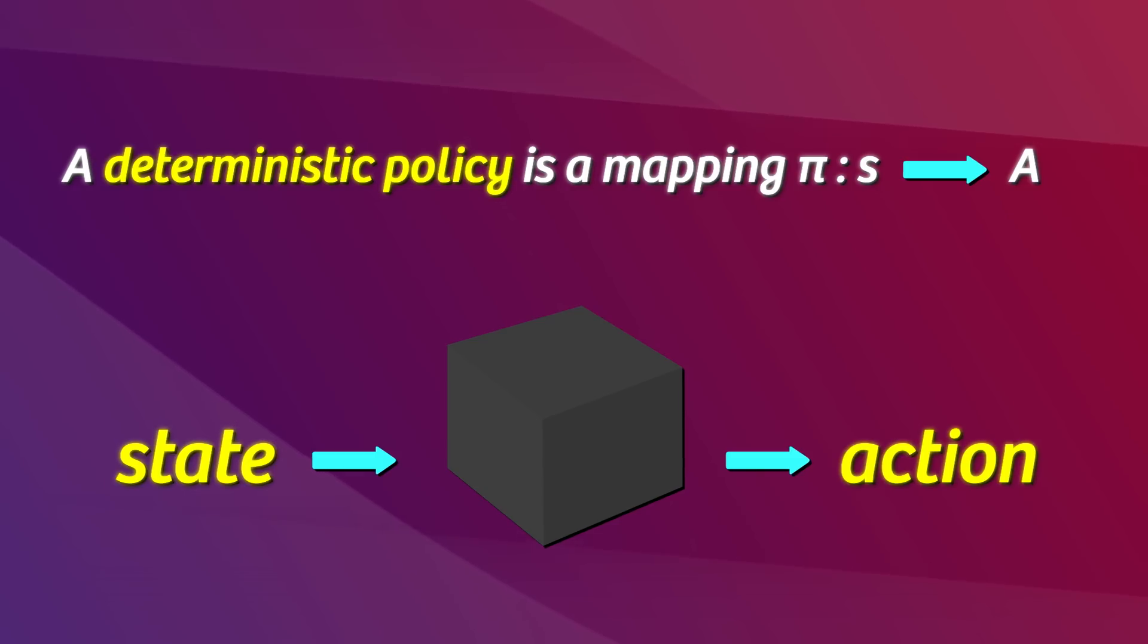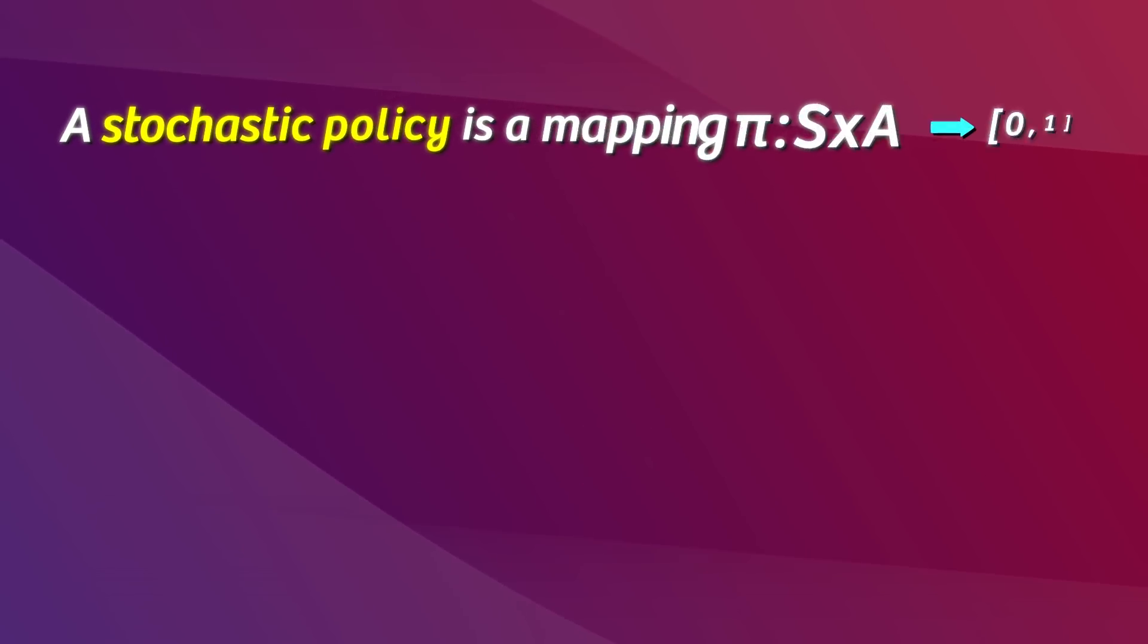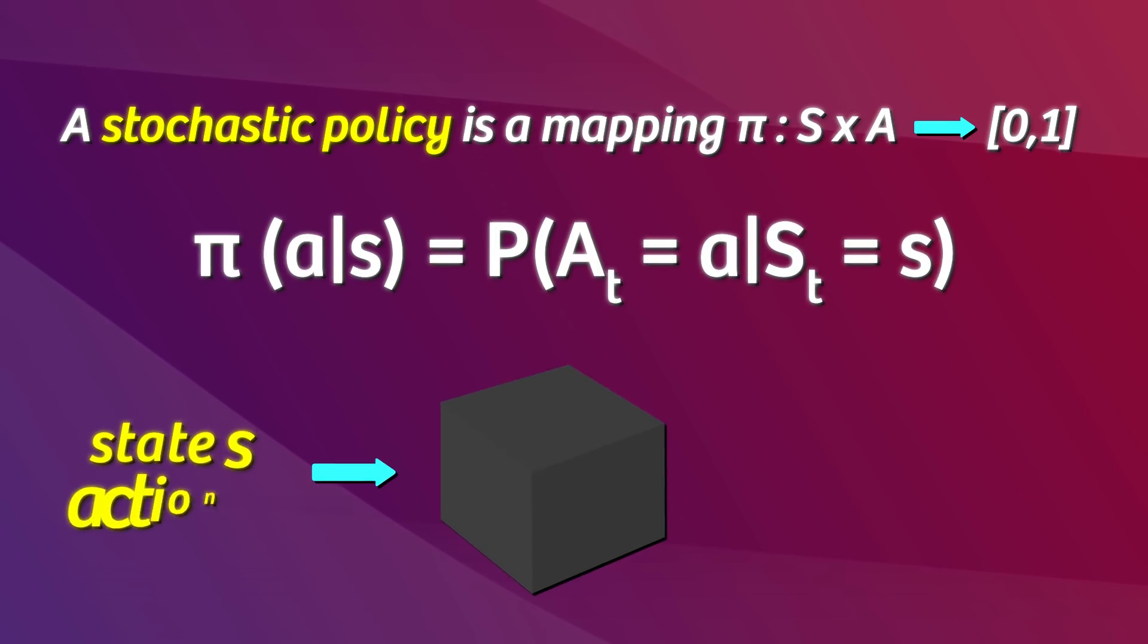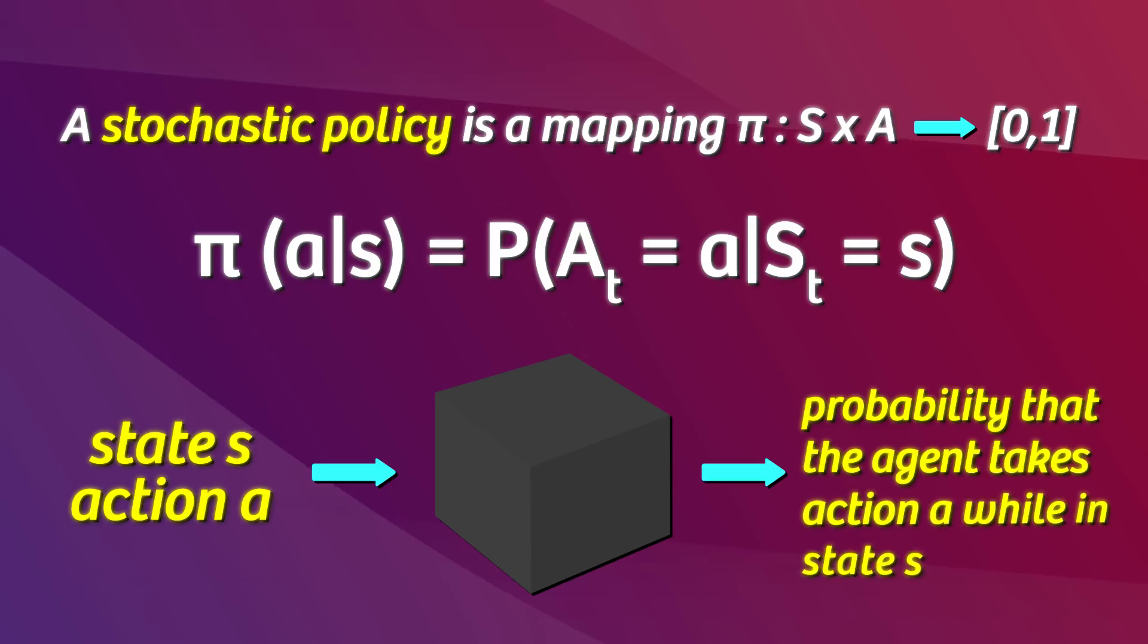In contrast, a stochastic policy will let the agent choose actions randomly. We can define a stochastic policy as a mapping that accepts an environment state S in action A, then returns the probability that the agent takes action A while in state S. The most common way to denote the policy, by the way, is by using the Greek letter pi.